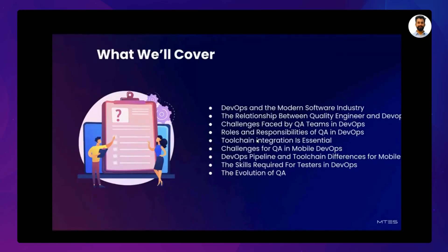Let's walk through the agenda for today's session. We will start with an introduction to DevOps and their importance. Then we will learn the relationship between QA and DevOps. Moving further, we will discuss the role of QA in DevOps and their responsibilities in brief. Then we will discuss challenges that QA face while working with DevOps and have a deeper look at toolchain integration and their importance. At last, we will discuss skills required for QA to work with DevOps, and then we can have a conclusion and a Q&A session.